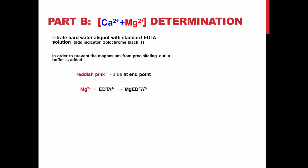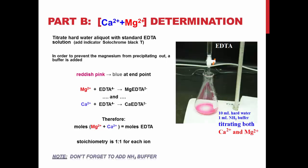Part B, the determination of calcium and magnesium concentration. This time, we will be titrating the hard water aliquot with standard EDTA solution and adding the indicator eriochrome black T. Note, we will not be precipitating out magnesium hydroxide. Again, this will turn from reddish pink to blue at the endpoint. Note that both magnesium and calcium have a 1 to 1 ratio with EDTA. Therefore, the moles of both magnesium and calcium will equal the moles of EDTA. Don't forget to add the ammonia buffer.